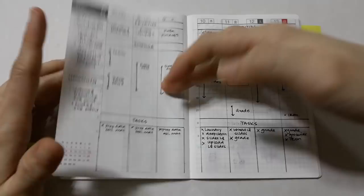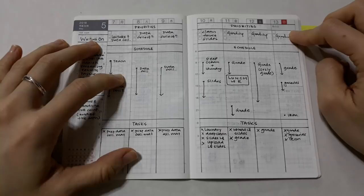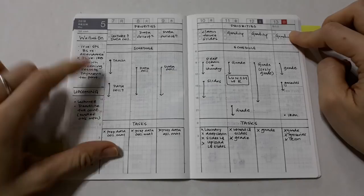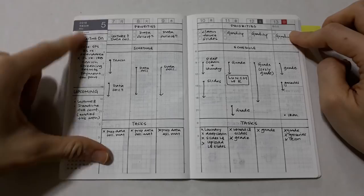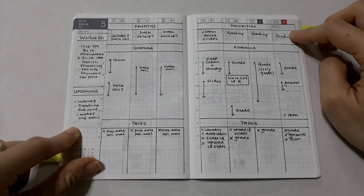This is a miniature version of my A5 weekly spread. At the top I write the priorities for each day and then I write the schedule as well as the task list. On the left column I write what I'm waiting on as well as things that are upcoming. The waiting on list helps me to remember to follow up with people when they owe me stuff, and the upcoming list ensures that the deadlines don't sneak up on me.